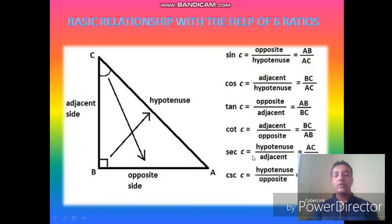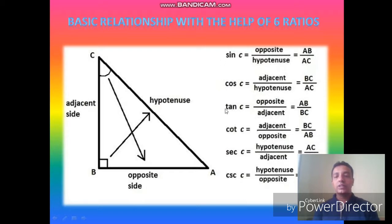Continuing the six ratios: sec C = AC/BC (hypotenuse over adjacent); cosec C = AC/AB (hypotenuse over opposite). We can observe that the first three ratios are exactly the reciprocals of the second three — tan is the reciprocal of cot, cos is the reciprocal of sec, and sine is the reciprocal of cosec.